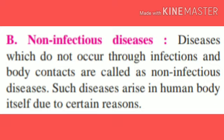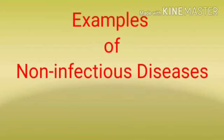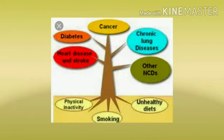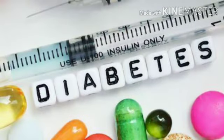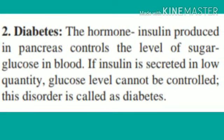Such diseases arise in the human body itself due to certain reasons. In the last lecture we learned that infectious diseases are spreadable — they pass from one person to another. But non-infectious diseases do not pass from one person to another. Examples of non-infectious diseases are diabetes, cancer, heart diseases, etc.